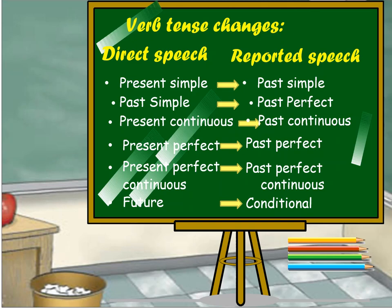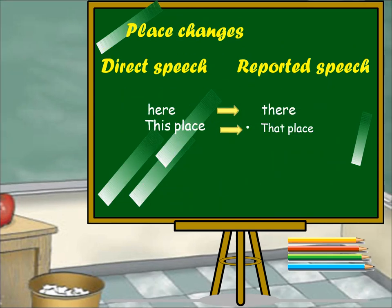Present perfect continuous becomes past perfect continuous. Future becomes conditional. For example: He said, 'I have passed the examination.' The sentence is in present perfect. When we change it to past perfect, the indirect form becomes: He said that he had passed the examination. Another example: Tom said, 'All the boys were singing.' The sentence is in past continuous, so it changes to past perfect continuous. The indirect speech will be: Tom said that all the boys had been singing.